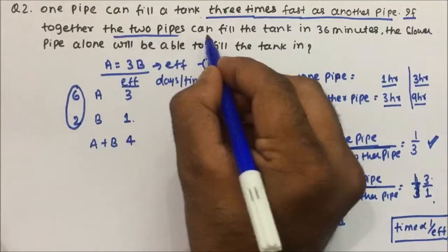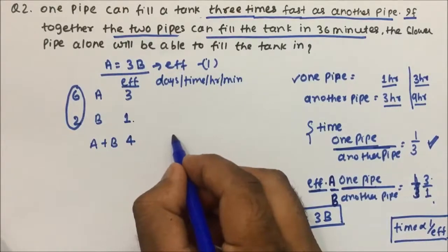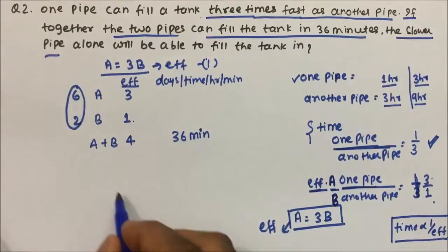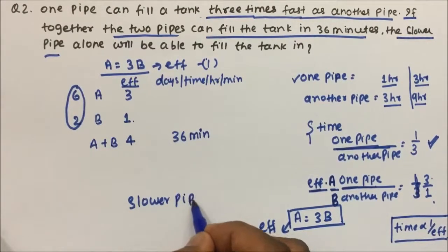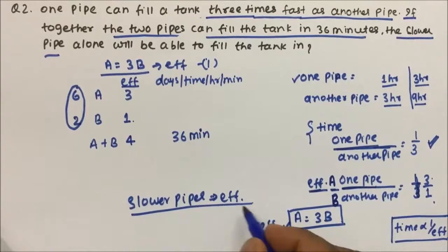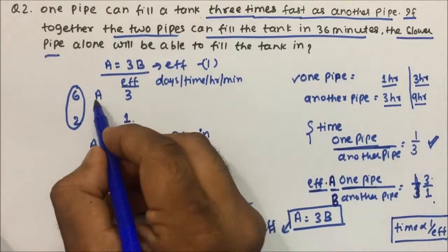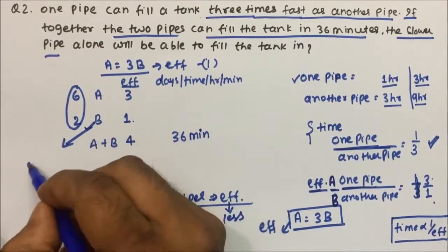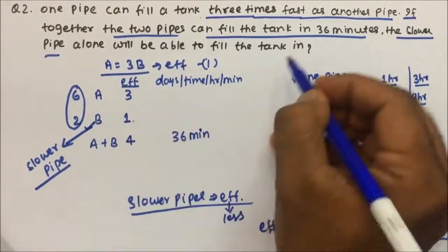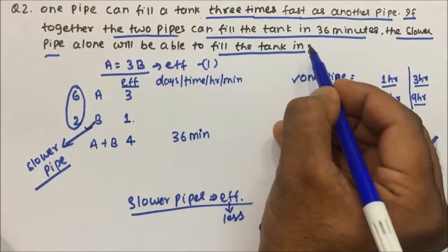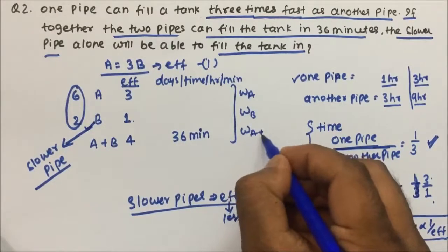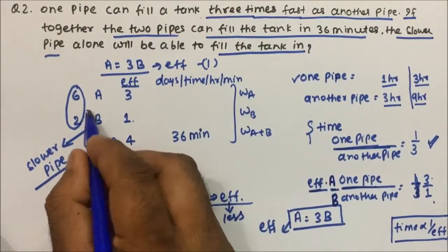Together the two pipes fill the tank in 36 minutes. The slower pipe is the one with less efficiency, which is B with efficiency 1. They are asking how much time the slower pipe B takes alone to fill the tank. Work done by B equals work done by A+B since it is the same tank.